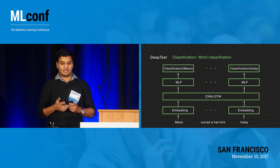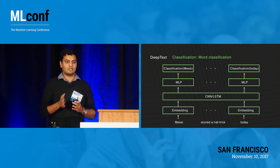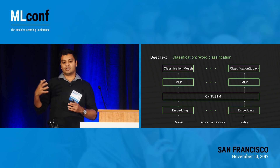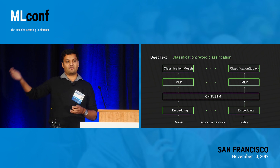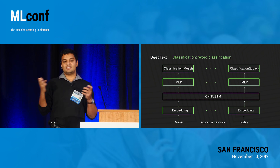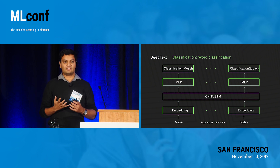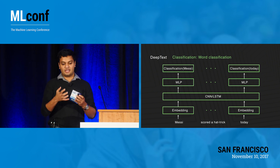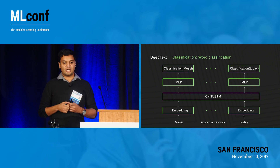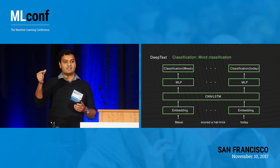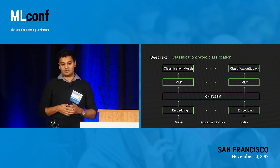One thing we noticed — and there's research from folks at Google on this as well — is that instead of predicting labels per token and optimizing each token prediction individually, if you stick a CRF on top of your LSTM and jointly optimize for your entire sequence, you get significant improvements in recognizing named entities. That said, it's hard to ship at production because that function is a lot slower than vanilla LSTMs or CNNs. So we spent a fair bit of time making CNN plus CRF and LSTM plus CRF work at Facebook scale for every single post, message, and comment in real time.